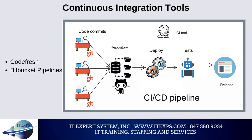Bitbucket Pipelines is a CI tool that integrates directly into Bitbucket, a cloud-based source control system. It lets you manage pipelines as code and deploy your projects to production via CD tools. You can use Bitbucket Pipelines to create pipeline definitions and kick off builds.